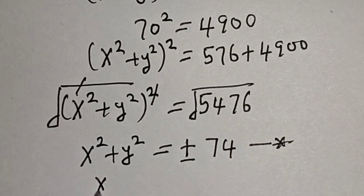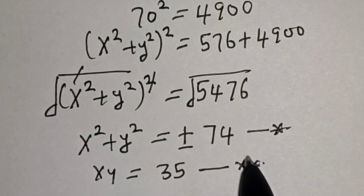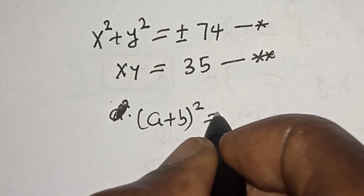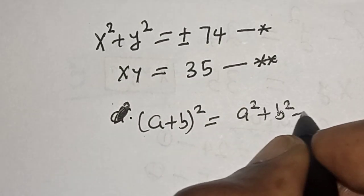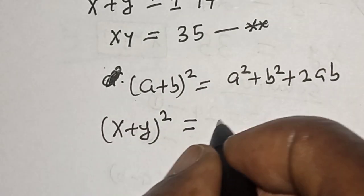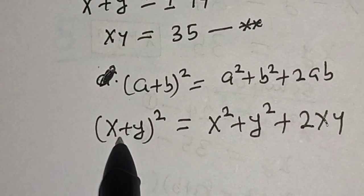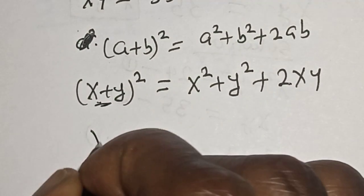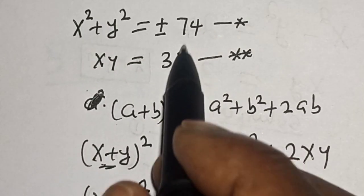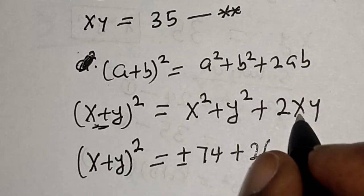We know from equation two that xy equals 35. Now using the rule (x plus y)² equals x squared plus y squared plus 2xy, we have (x plus y)² equals (x squared plus y squared) plus 2xy. From equation star, x squared plus y squared equals plus or minus 74, and 2xy equals 2 times 35, which is 70. So (x plus y)² equals plus or minus 74 plus 70.